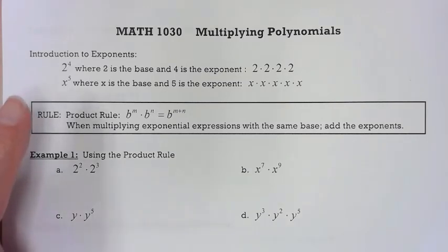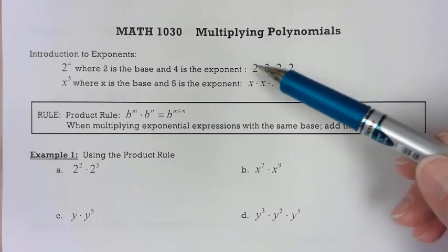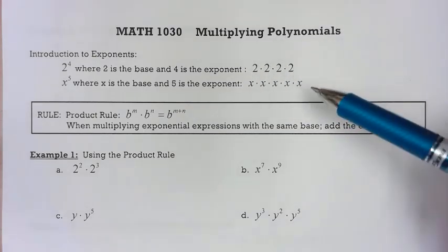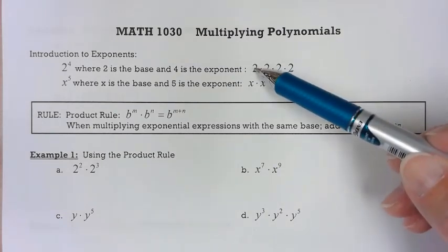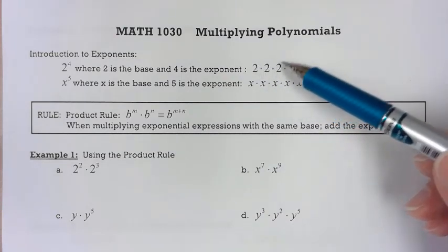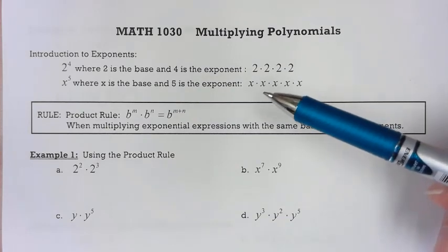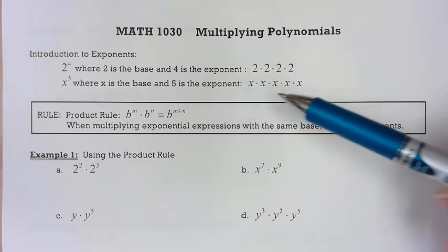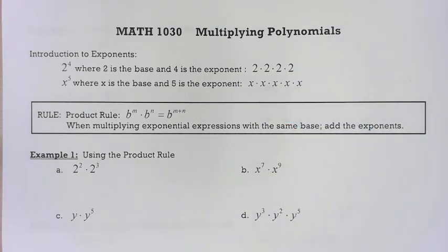If you have 2 to the 4th, where 2 is the base and 4 is the exponent, this means 2 times 2 times 2 times 2. It's a shorthand notation telling you what the factor is — the base — and how many times you write it down. For example, x to the 5th expanded would be x times x times x times x times x.